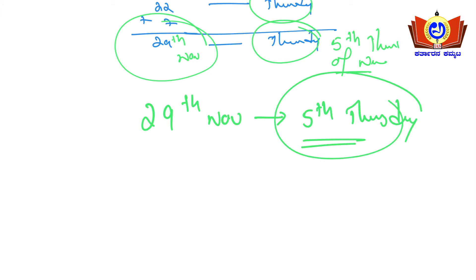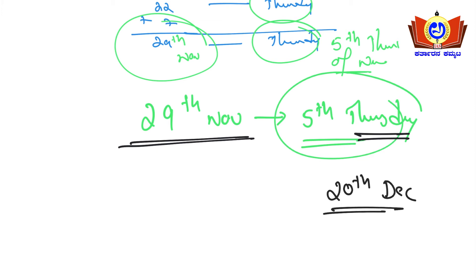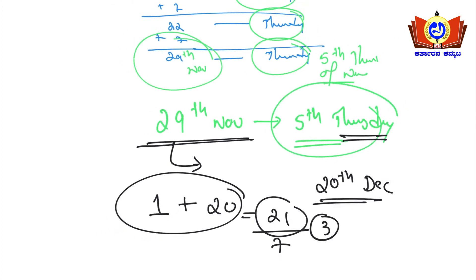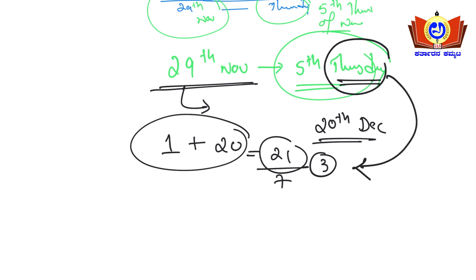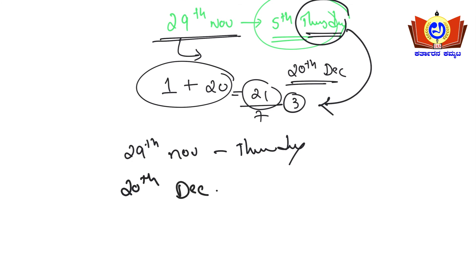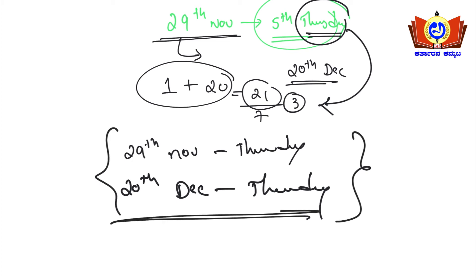Now finding the third child's birthday on 20th December. From 29th November: 1 day remains in November, plus 20 days in December equals 21 days. 21 is exactly 3 weeks, so the day repeats — 20th December is also Thursday. Thursday is the answer.